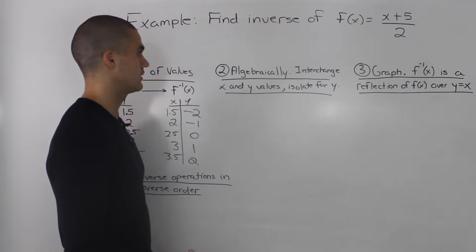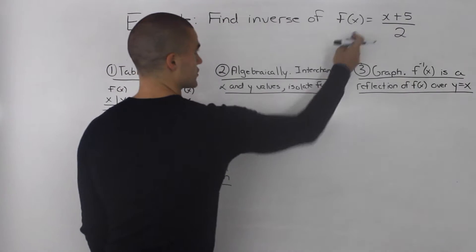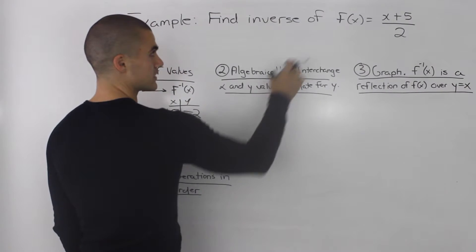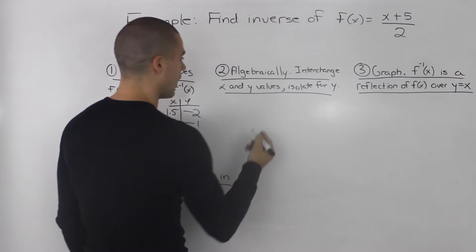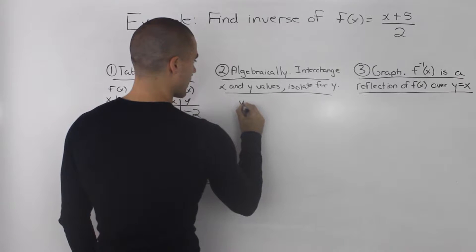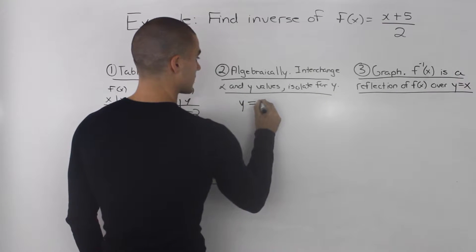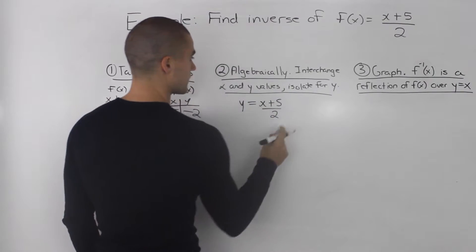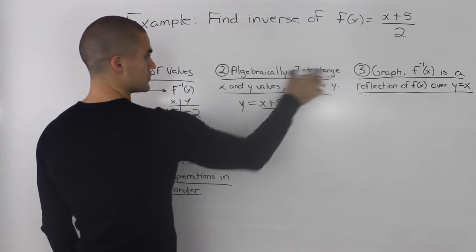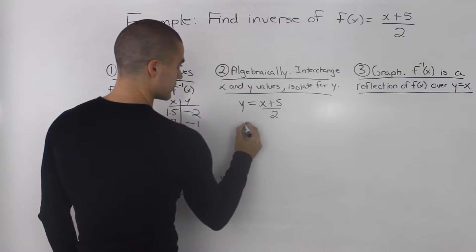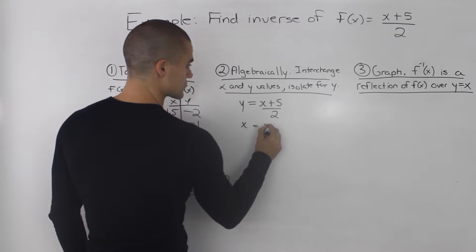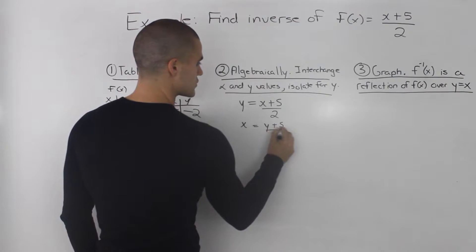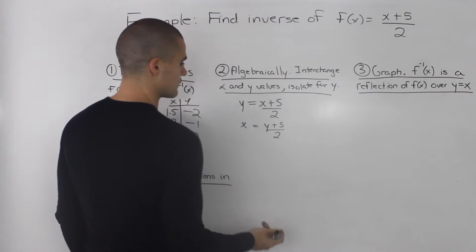Now the second way of finding an inverse is algebraically. So I'm going to take the function that we're given and rewrite it here but instead of f(x) I'm going to put a y. So y equals (x+5)/2. And now what we do is we interchange the x and y values. So x equals (y+5)/2. And then we isolate for y.